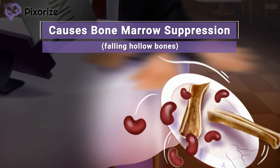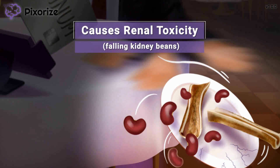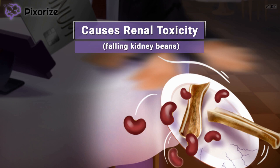Now let's focus on findings more specific to Cisplatin. The bones weren't the only thing on the man's plate — he also had a few leftover kidney beans that are now tumbling to the floor. Kidney beans are a symbol for kidneys, and the way they are falling can remind you that Cisplatin causes kidney damage or reduced kidney function. As the nurse, you're going to want to monitor the patient's BUN, creatinine, and urine output. It's also important to encourage the patient to stay hydrated, because that can help minimize the amount of kidney damage.